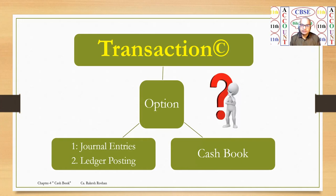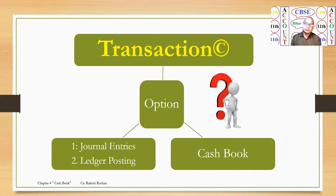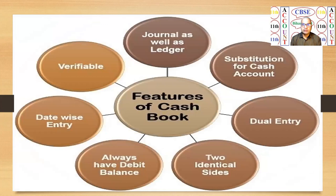If you have a journal entry and ledger posting, then the cash book will not be maintained. If you have the cash book maintained and you record transactions in the cash book, then you will not have to post the journal and ledger. That is the basic concept of this chapter.